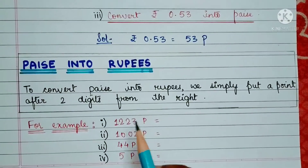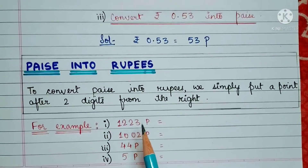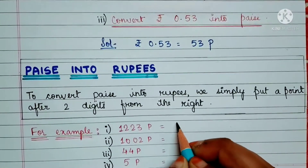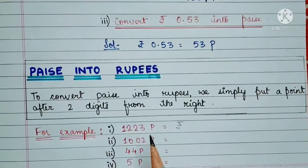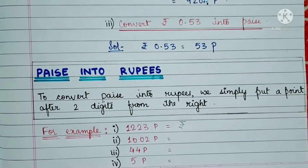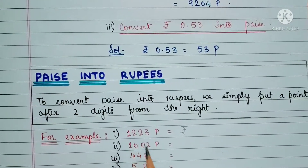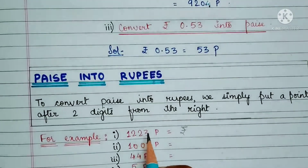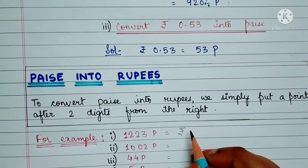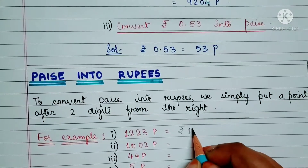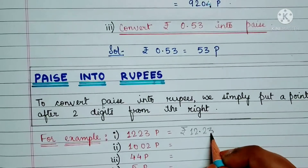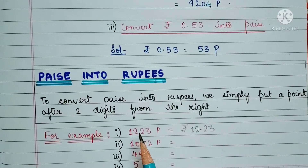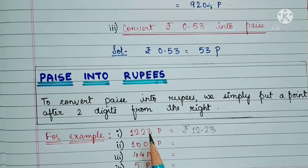For example, here we have 1223 paise to be converted into rupees. What we will do is first write the symbol of rupees. Whenever we convert paise into rupees, we write the symbol of rupees. Then we simply put a point after 2 digits from the right side. So 1223 paise becomes 12 rupees 23 paise. We have converted this by putting a small dot just after 2 digits from the right side.